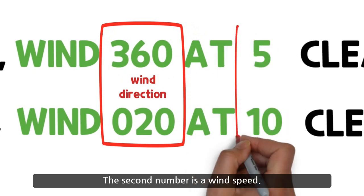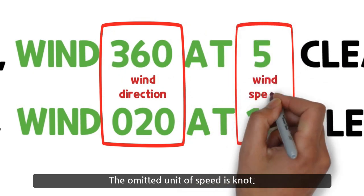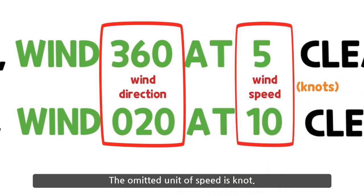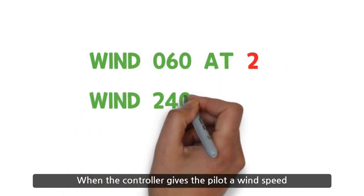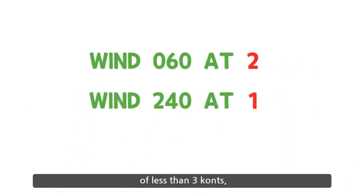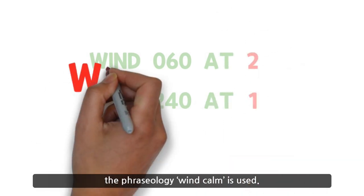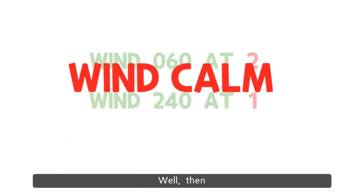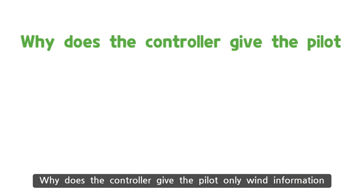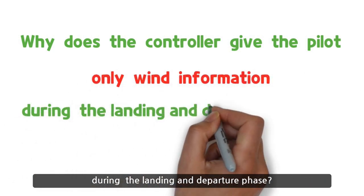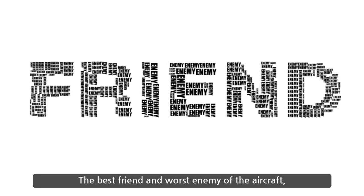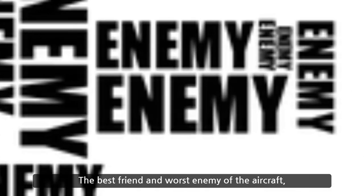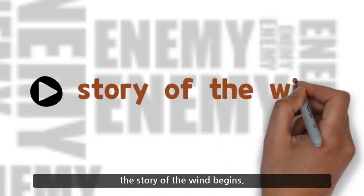The second number is wind speed. The omitted unit of speed is knots. When the controller gives the pilot a wind speed of less than three knots, the phraseology 'wind calm' is used. Well then, why does the controller give the pilot only wind information during the landing and departure phase? The best friend and worst enemy of the aircraft — the story of the wind begins.